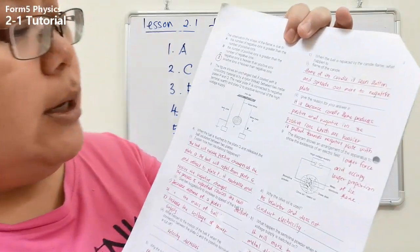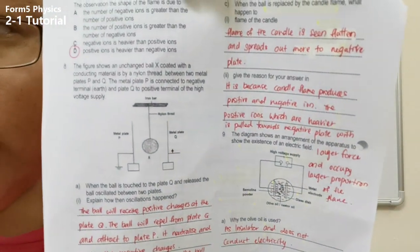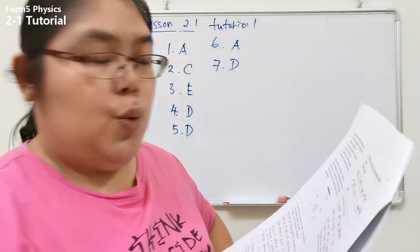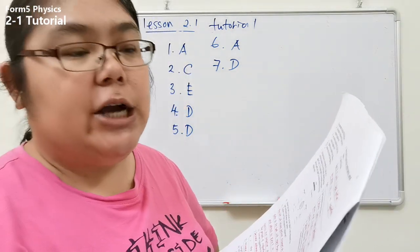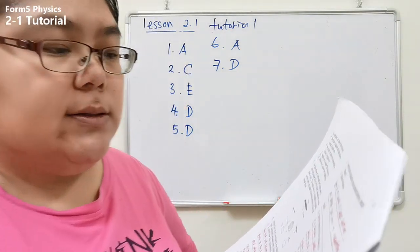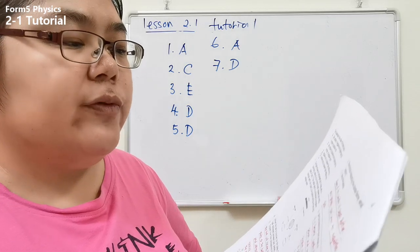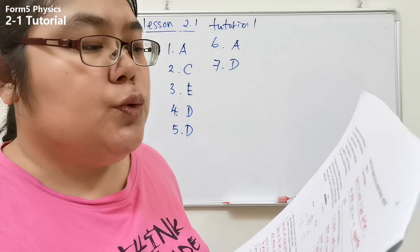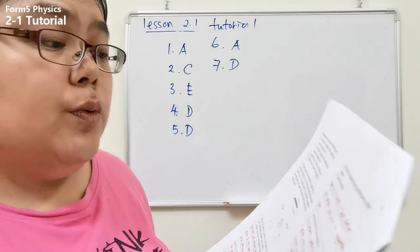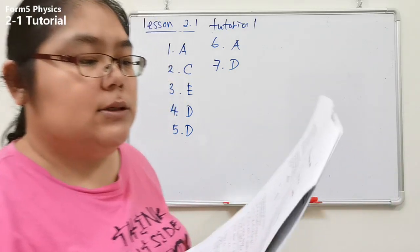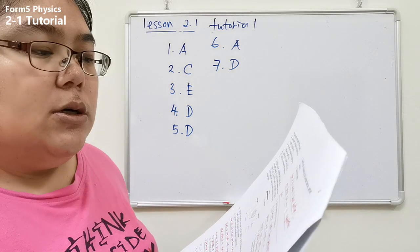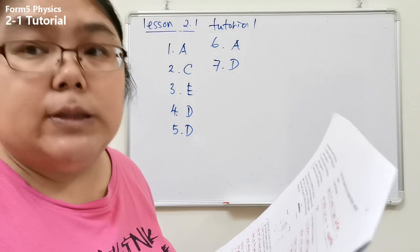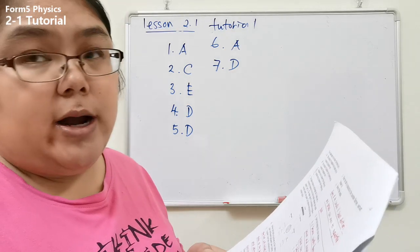Question number eight is about a ping pong ball oscillation between two blades. The figure shows an uncharged ball coated with conducting material, suspended by a nylon track between two metal plates P and Q. Plate P is connected to the negative terminal and earth, and plate Q is connected to the positive terminal of a high voltage supply — that means extra high tension.